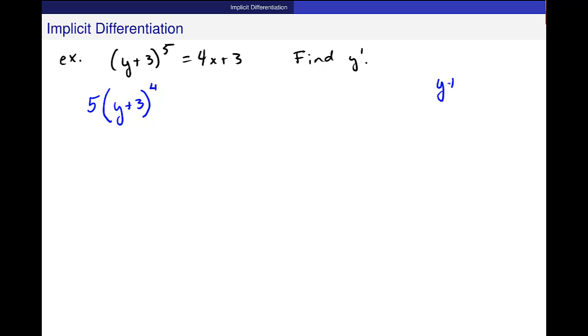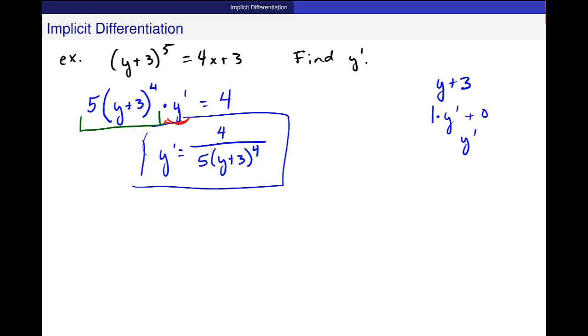And then I have to multiply by y prime. The derivative of 3 is 0. So really this derivative is just y prime. Then I differentiate 4x plus 3 and I get 4. Okay? And then solving for y here is pretty easy. I got it all by itself. I'll just divide by this piece here. 5y plus 3 to the fourth. So I get y prime is equal to 4 divided by 5y plus 3 to the fourth power. And there you go. Okay? Okay. So let me know if you have any questions.